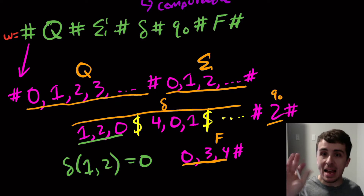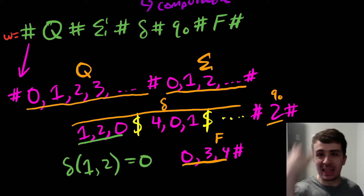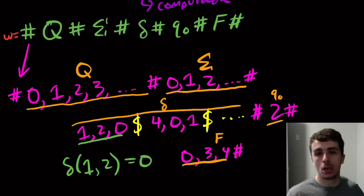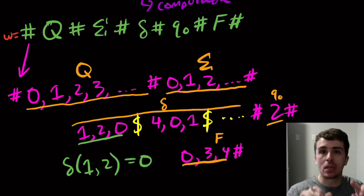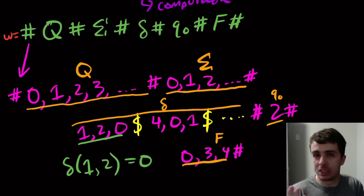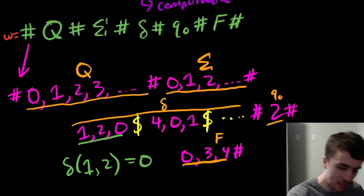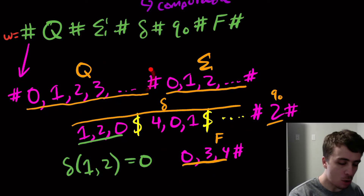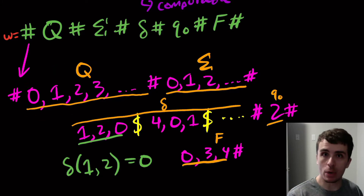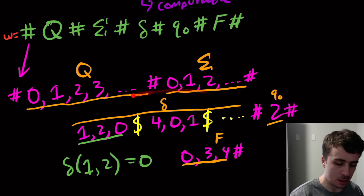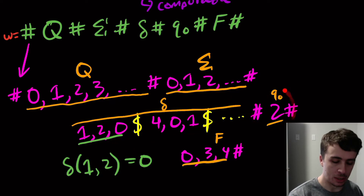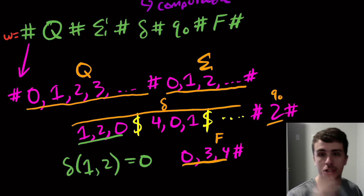It doesn't have to be in this order. It could be that we list F first, or Q first. In fact, you don't even need them to necessarily be in different sections — they could all be in the same section, as long as there is a way to recover what the original machine is. Because if you read this input string, you see: this part is the Q part because we agreed to that in advance, this part is the input characters, here's the transition function, here's the start state, here are the final states. So this works.